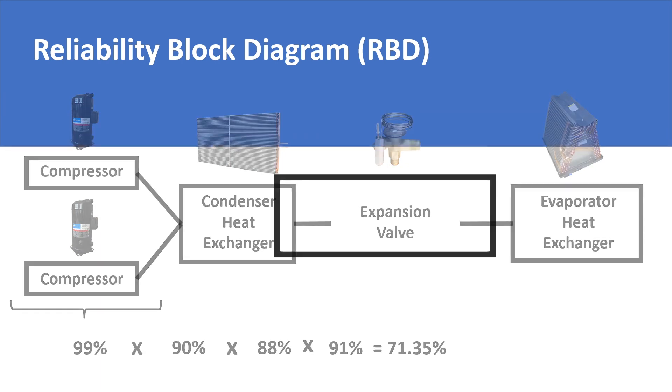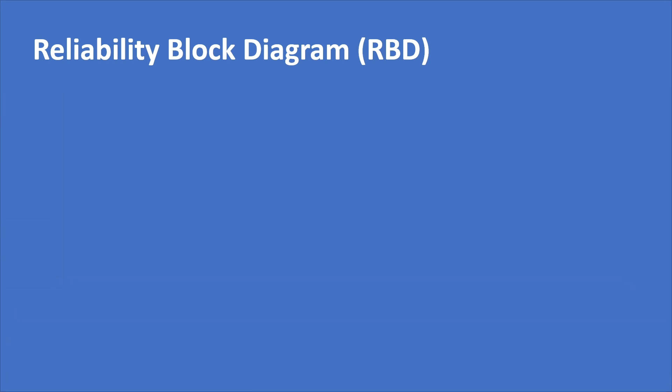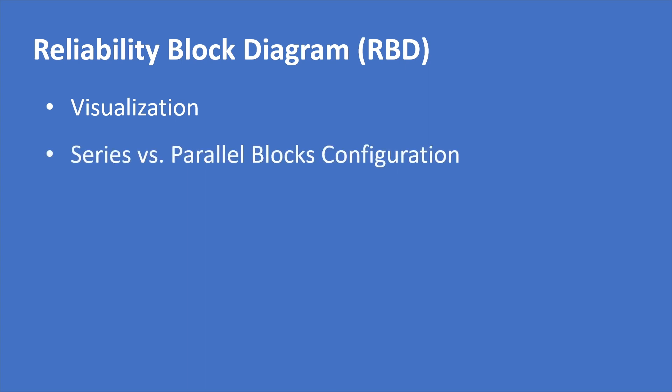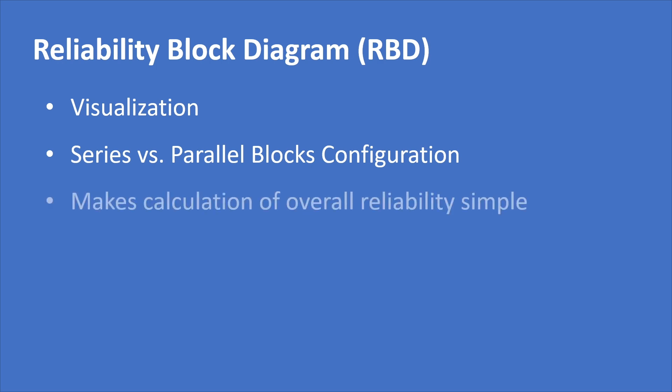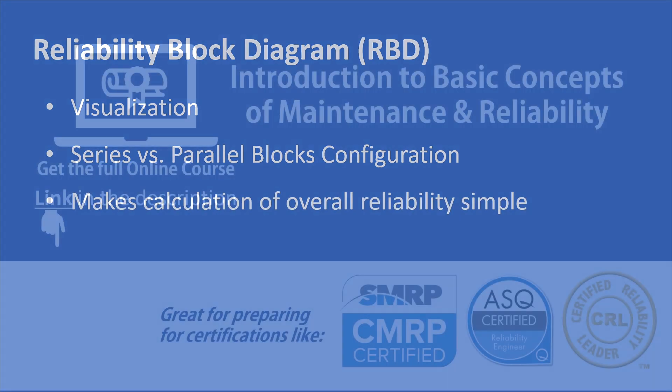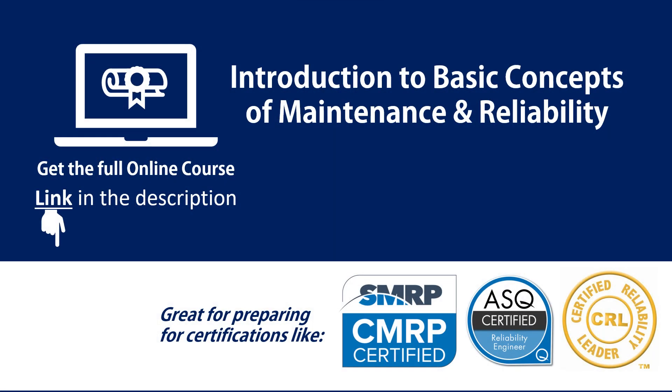In this way, a reliability block diagram allows you to visualize whether machine components are in series configuration or parallel configuration. It allows you to make calculations of the overall reliability of the system accordingly. With this, we conclude this discussion.